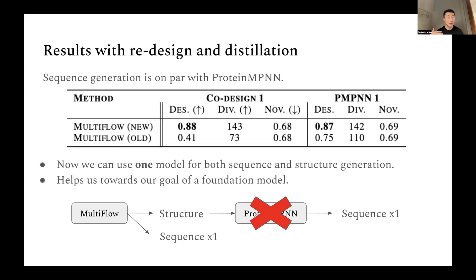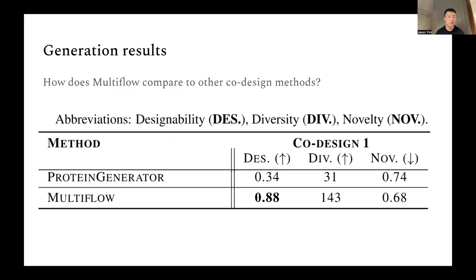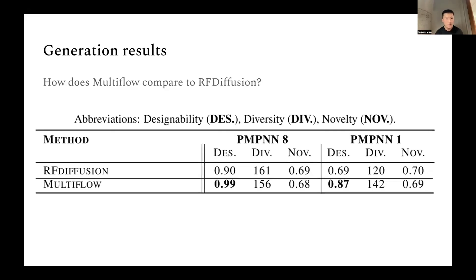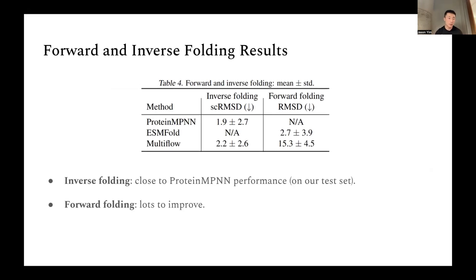Inverse folding results are close to ProteinMPNN: RMSD around 2.0 for ProteinMPNN versus 2.2 for MultiFlow. Forward folding, however, is much worse than ESMFold, leaving significant room for improvement. All results so far are unconditional generation — no external conditioning. A separate paper explored multi-scaffolding with SE3 flow matching, and extending multi-scaffolding to co-design with MultiFlow is planned. The paper is available on arXiv.